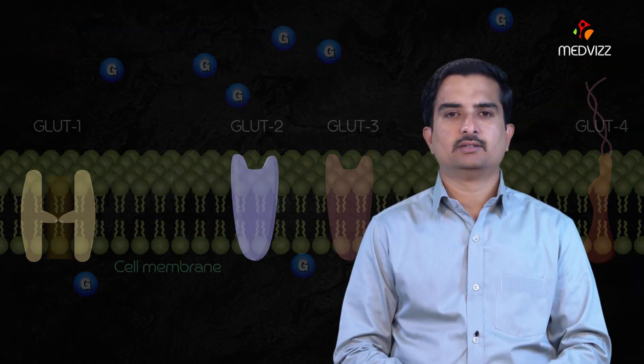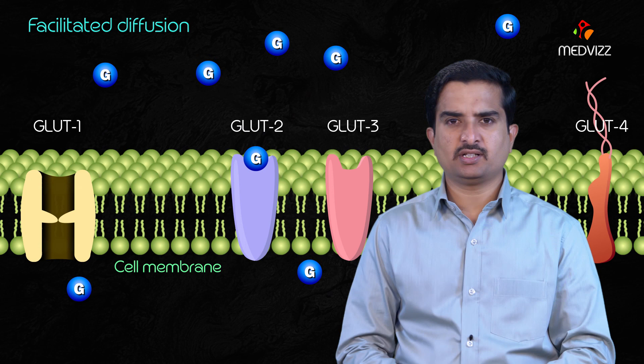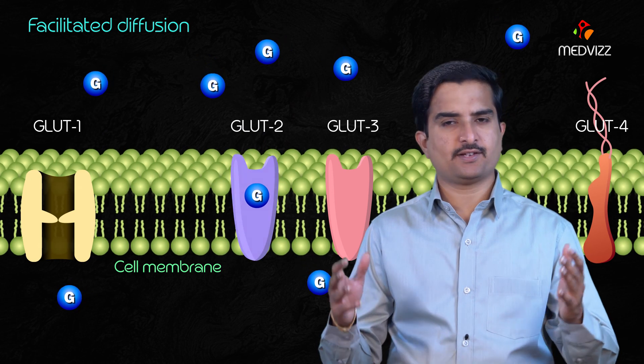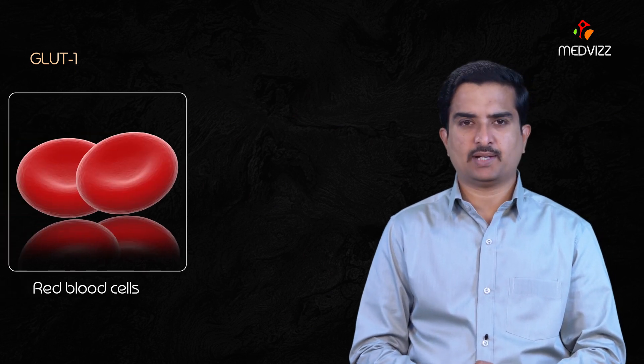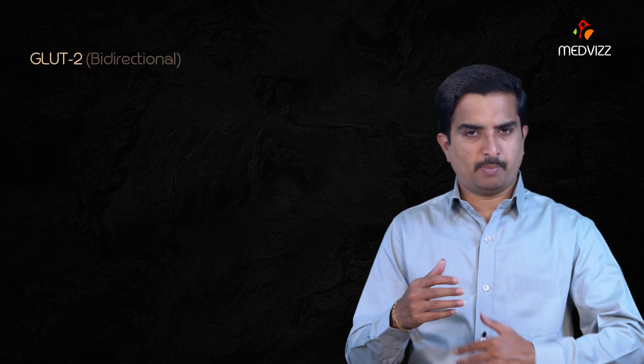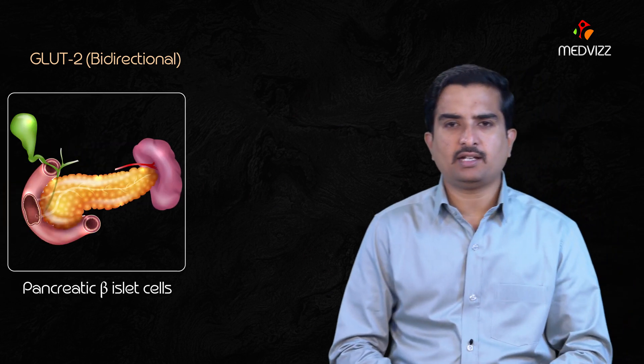Glucose transportation by the GLUT transporters all work via facilitated diffusion. GLUT 1 is found in most cell types including RBCs as well as the brain. GLUT 2 is bidirectional and mainly located in the pancreatic beta cells.